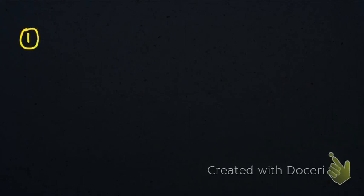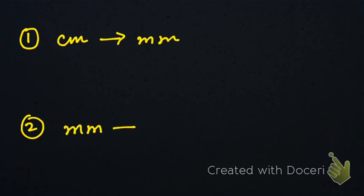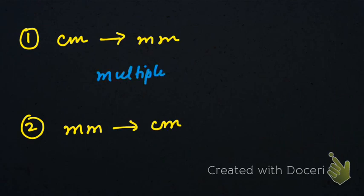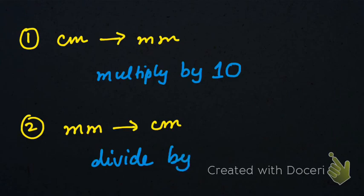Let's do a recap of what we learned today. First, we learned how to convert centimeters into millimeters, and then how to convert millimeters into centimeters. To convert centimeters to millimeters, multiply the value by 10. To convert millimeters to centimeters, divide the value by 10. I hope it is clear — if you have any questions, write in the comment section below.